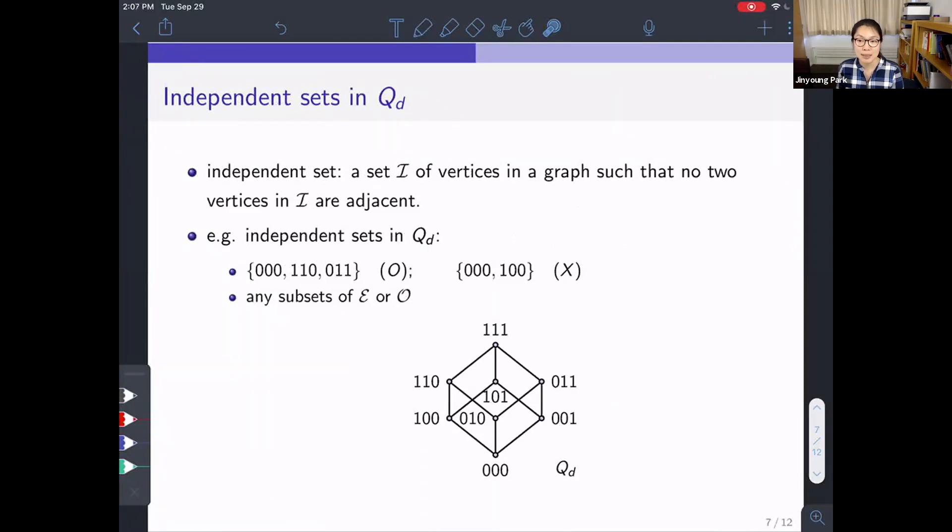We are interested in counting independent sets in Q_d. Here, an independent set is defined in this way: a set I of vertices in a graph such that no two vertices in I are adjacent. For example, when we look at Q_d, if we choose this, this, and this vertices, then this is an independent set because there are no edges between them. On the other hand, if we choose this and this vertex, then this is not an independent set. And an easy way to get an independent set in Q_d is to take any subsets of E or O. Because, as I said, there are no edges inside E or O.